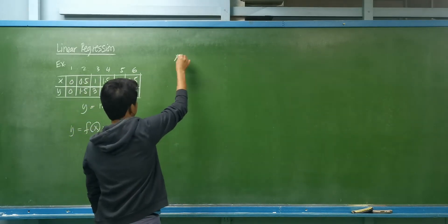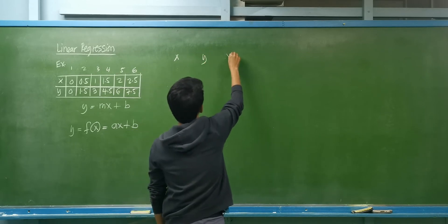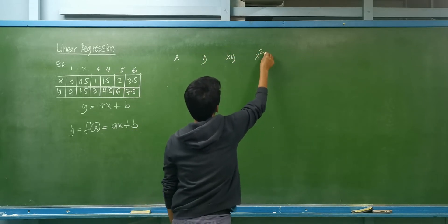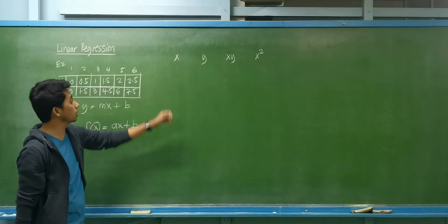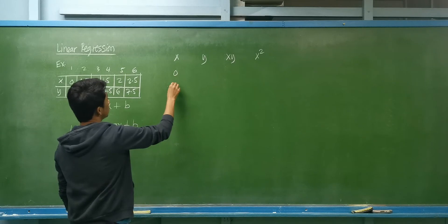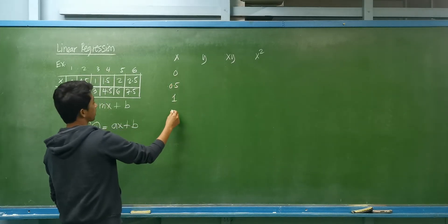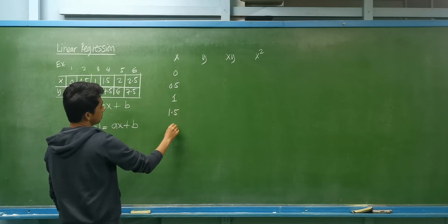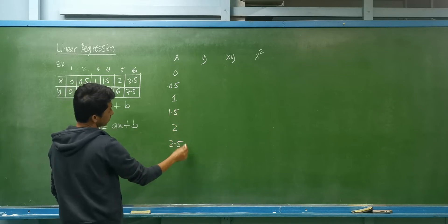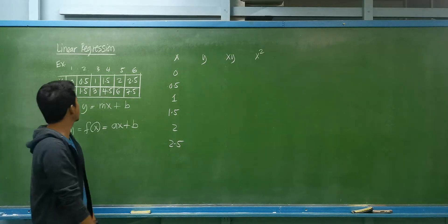Let's set up our table with columns for the value of x, the value of y, the product of x and y, and the value of x squared. The x values are: 0, 0.5, 1, 1.5, 2, and 2.5.